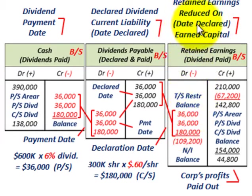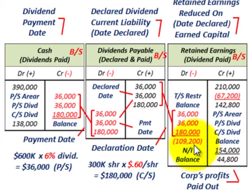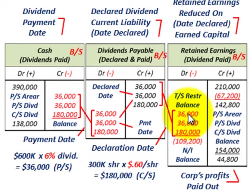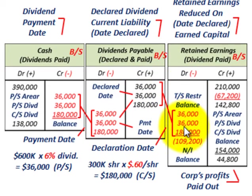With our non-liquidating dividend, we directly reduced our retained earnings for those dividend amounts on the date the dividend was declared — and that's our earned capital. We're able to pay out our dividends because the corporation has profit. So we've taken care of the date of declaration: we set up our payable, and then we directly reduced our retained earnings by the amount of those dividends.